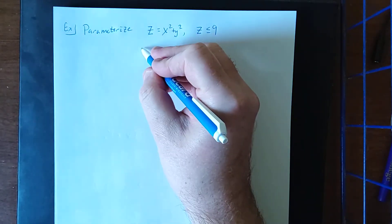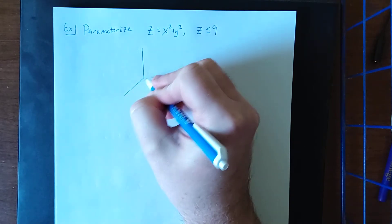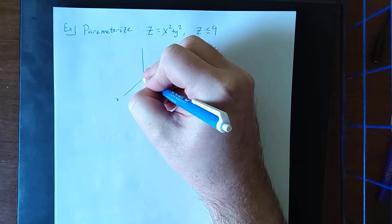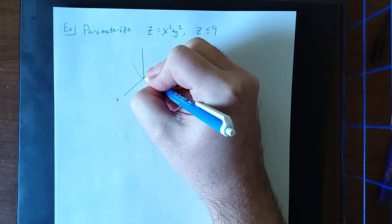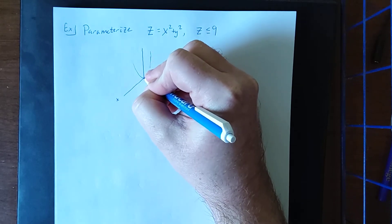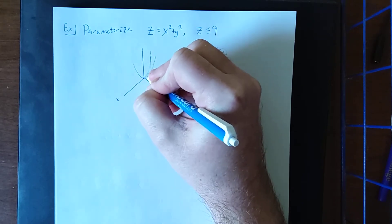Now I'm going to attempt to sketch what this is going to look like in three dimensions. There's an x-axis, y-axis. So in the xz trace this is going to look like a parabola and in the yz trace this is going to look like a parabola as well.